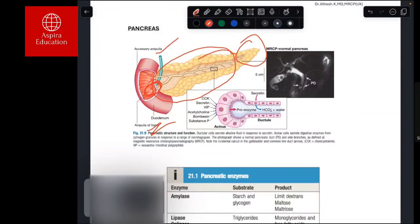This is the typical pancreatic acinus, the glandular part. These are the cells that form the acini. The cells are controlled by various hormones like cholecystokinin, secretin, VIP, acetylcholine, bombesin, and substance P.